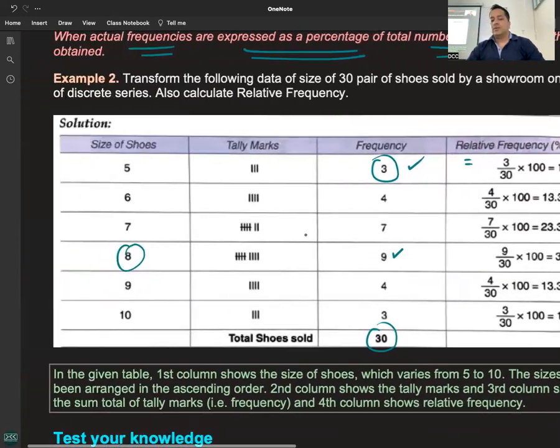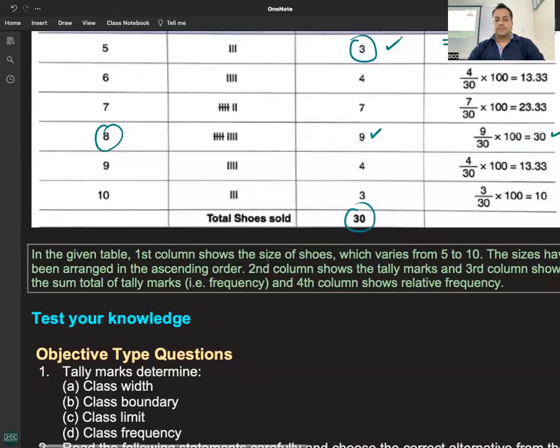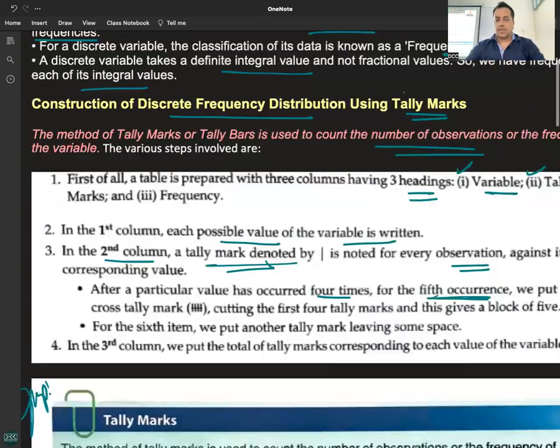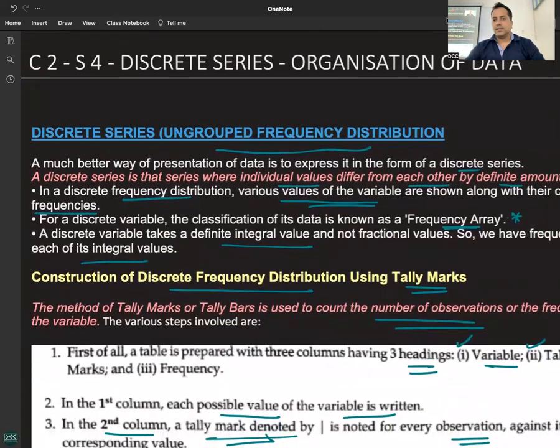What is it called? Relative frequency. We've done this now. So what have we covered? Individual series and discrete series.